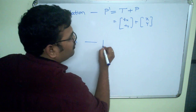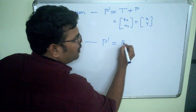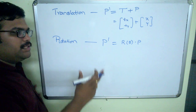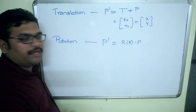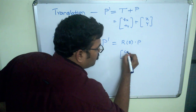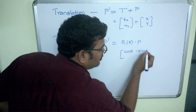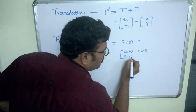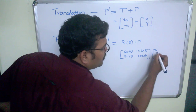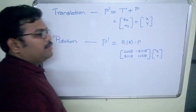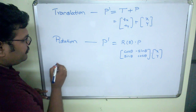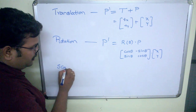For rotation, we derived P-dash equals R(theta) into P, where we multiply with the old coordinates. This can be written in matrix form as [cos θ, −sin θ; sin θ, cos θ] into [x, y]. This is the formula derived for the counterclockwise direction.